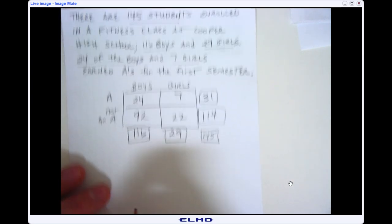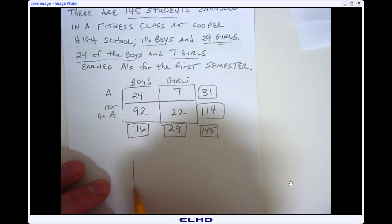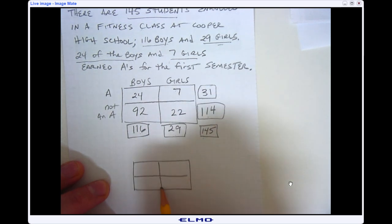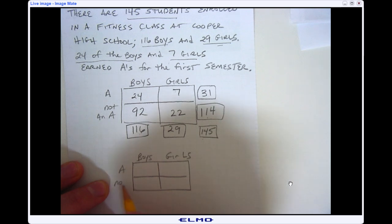Now again if I turn this into a relative frequency table I'm going to still make the same four columns and I'm going to label this still boys and girls and then A and no A.